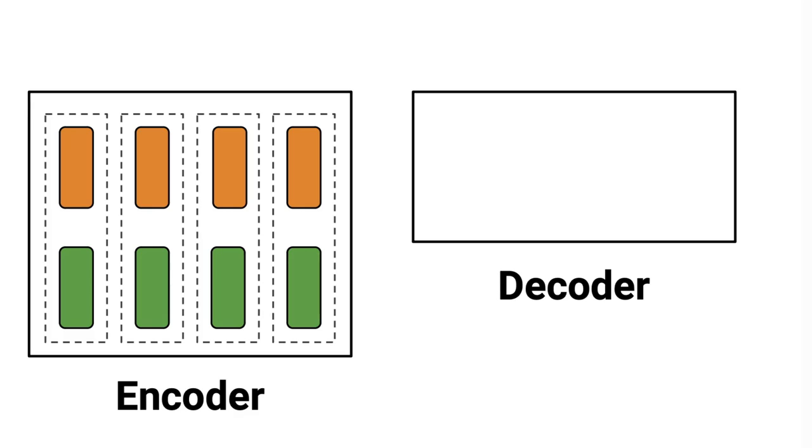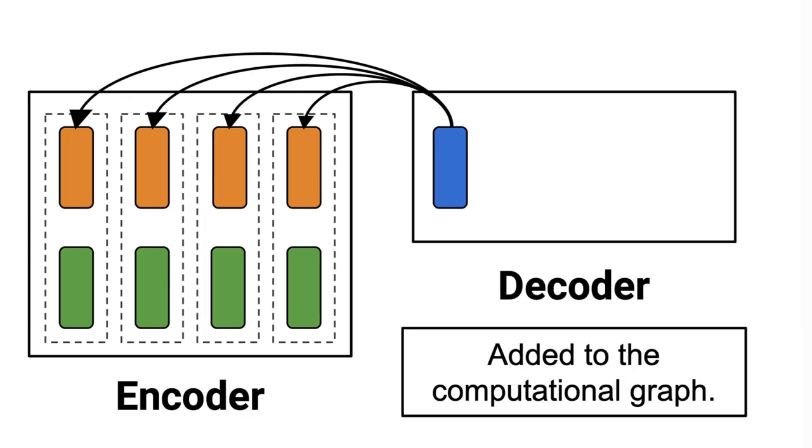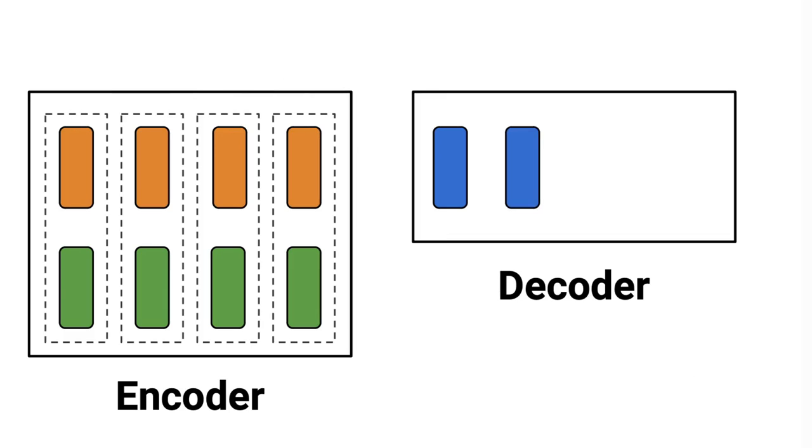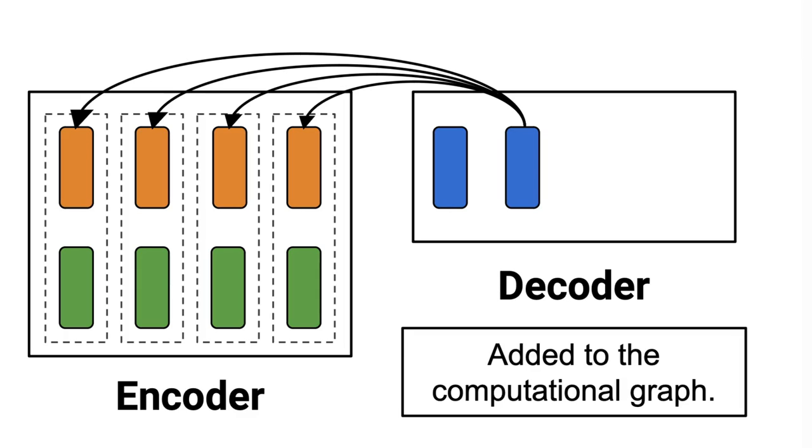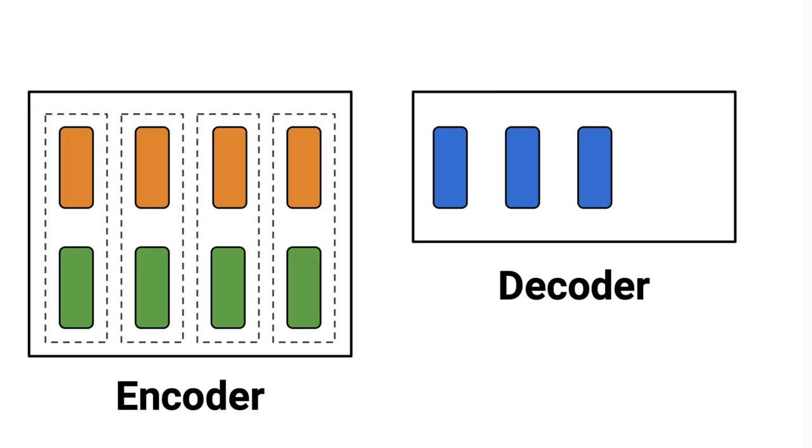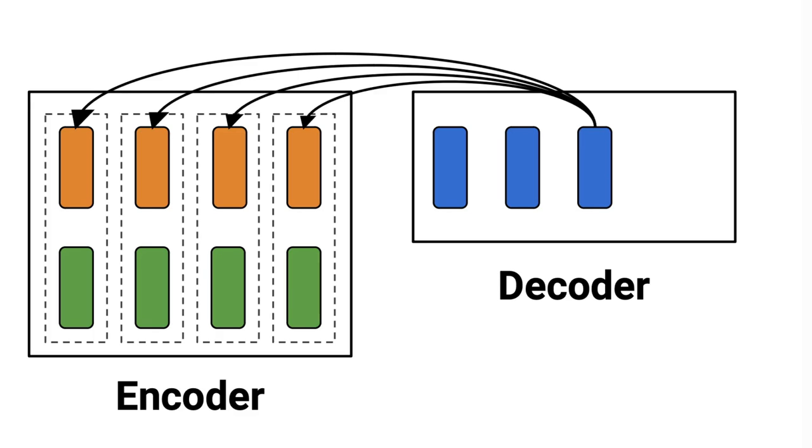And that's basically how the multi-head, multi-query, and group query attention works. Thanks for watching, and please hit the like button if you enjoyed this explanation, it really helps me out with the YouTube algorithm. And don't forget to share your thoughts in the comments below, and make sure to subscribe if you want to stay up to date with the content I create on this channel. See you next time, bye bye!